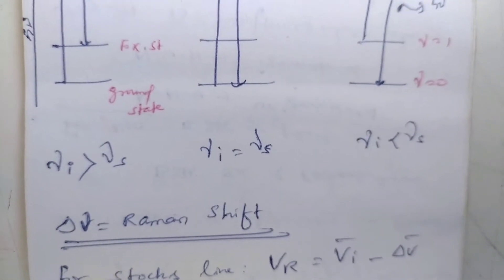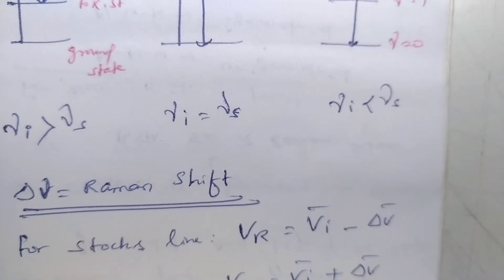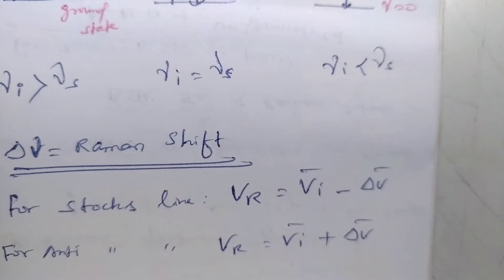Delta nu is the Raman shift. For Stokes line, V_R equals V_I bar minus delta V bar. For anti-Stokes line, V_R equals V_I bar plus delta V bar.